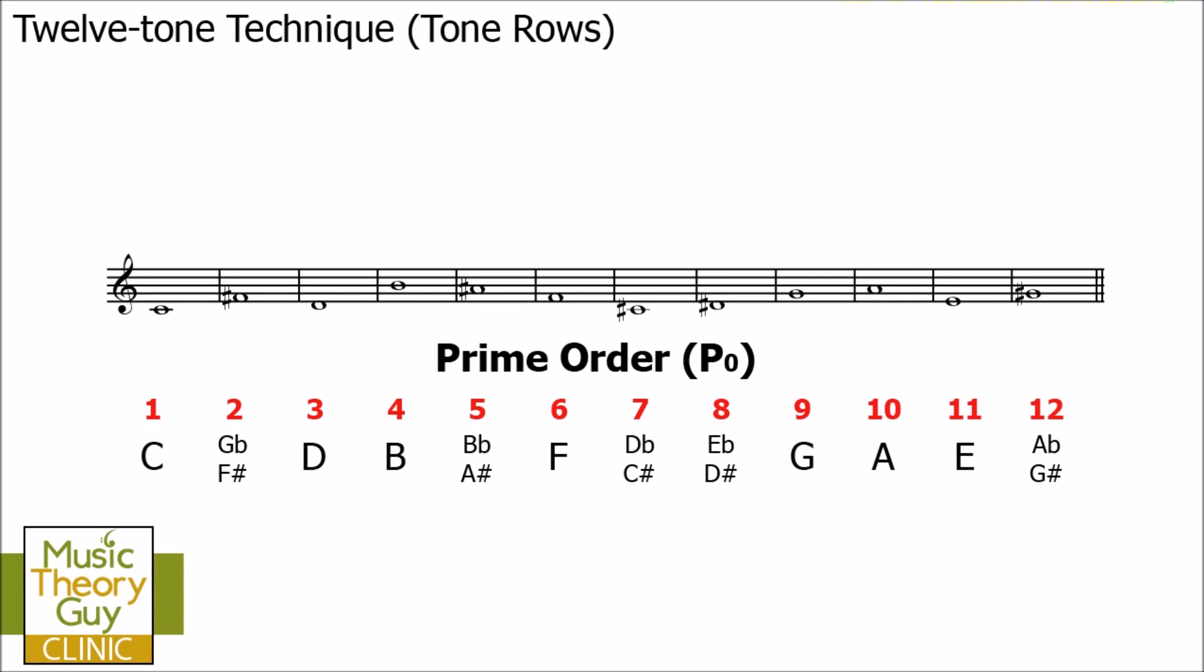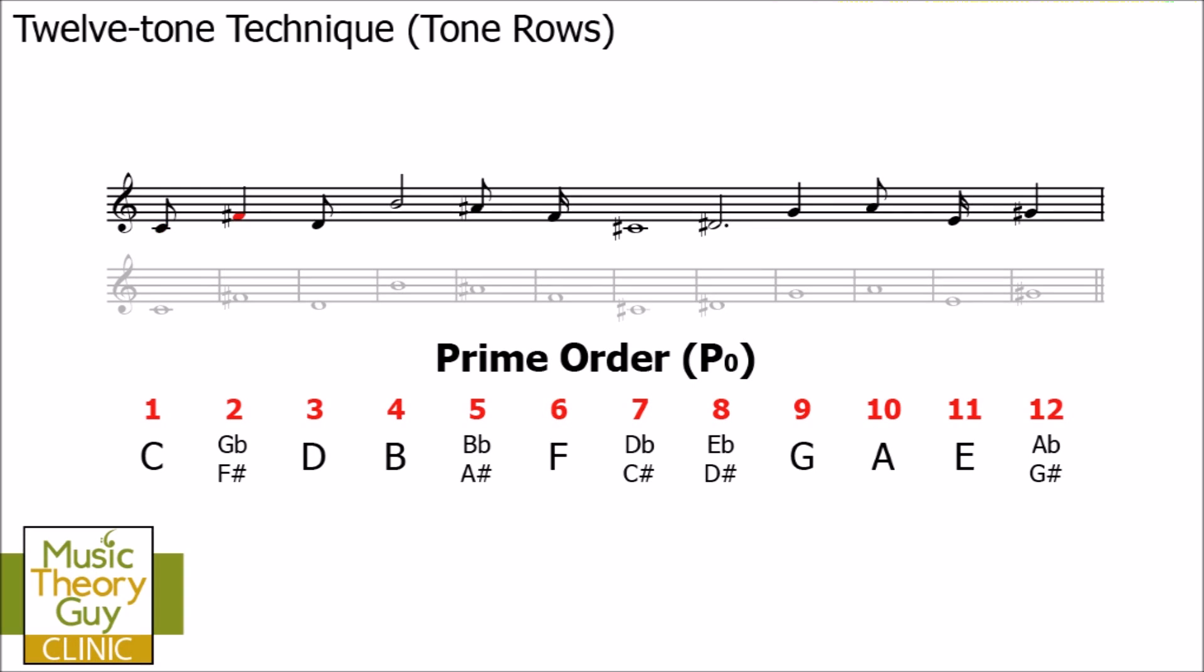Let's have a listen to these 12 notes in order. Now, I appreciate that's not the most exciting or memorable melody, but of course, I'm just playing all of the notes at exactly the same rhythm. Let's change the rhythm slightly. Let's have another listen. Okay, again, still not the most memorable melody, but you get the idea. We've got this random order of 12 different pitches and we can then change the rhythms that we're using in any music that we're composing using this prime order.